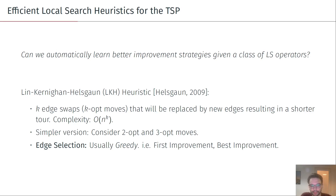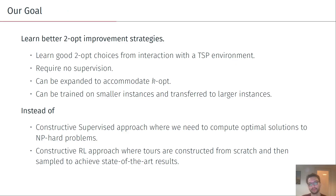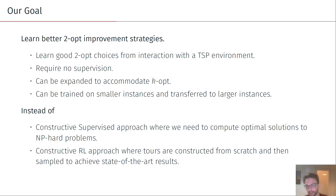You still have to have some way to do this edge selection, which is normally done in a greedy manner — for example, by selecting the first two edges that lead you to a better tour in the first improvement. So our goal with this work is to attempt to learn better tour improvement strategies by doing some interactions with the TSP environment, and the idea is that these methods should also be trainable on smaller instances and applicable to larger instances, much like a heuristic.